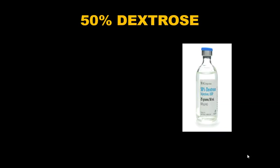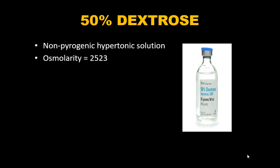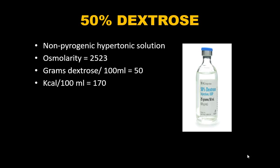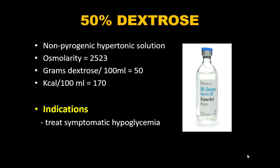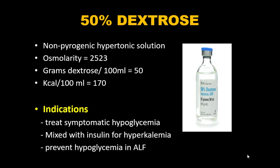50% Dextrose is a non-pyrogenic hypertonic solution with an osmolarity of 2523. It contains 50 grams per 100 mL — that is 170 kcal per 100 mL. Indications include treatment of symptomatic hypoglycemia, as part of the GI drip in treatment of hyperkalemia, and prevention of hypoglycemia in ALF or sepsis.